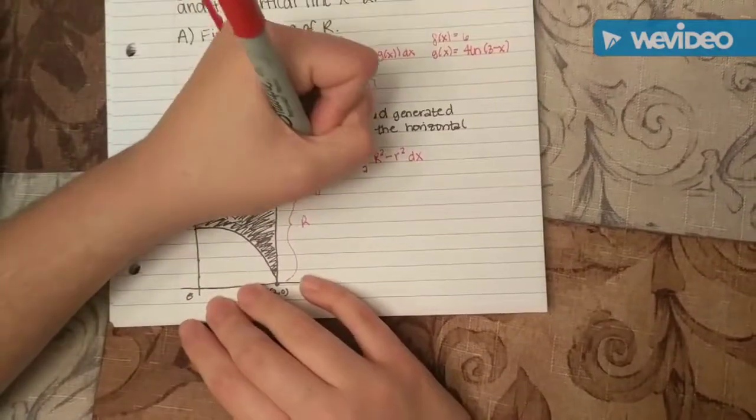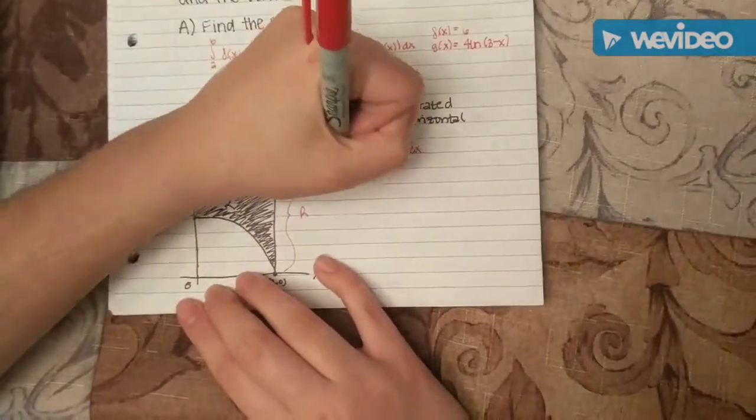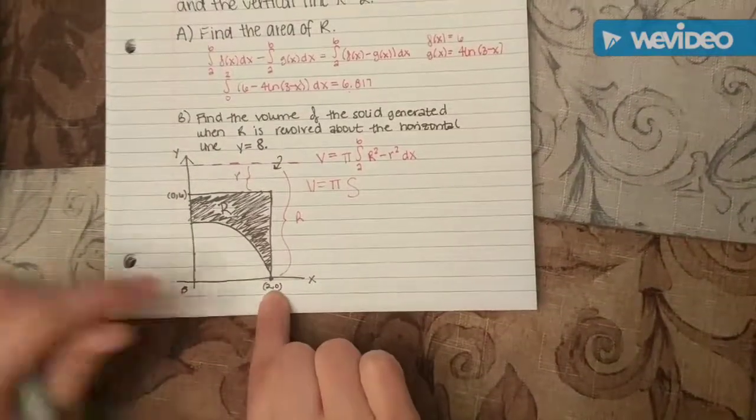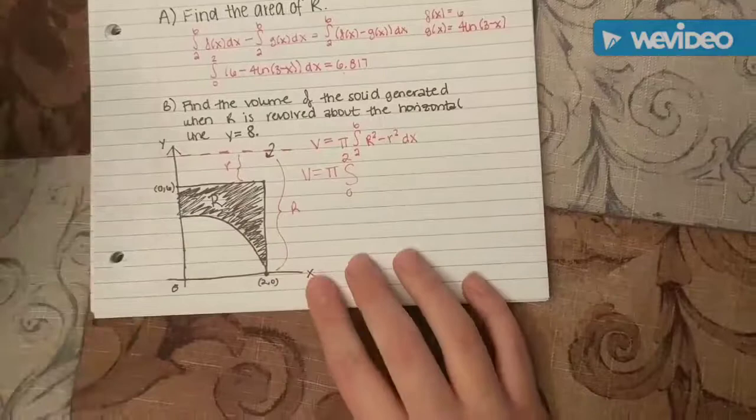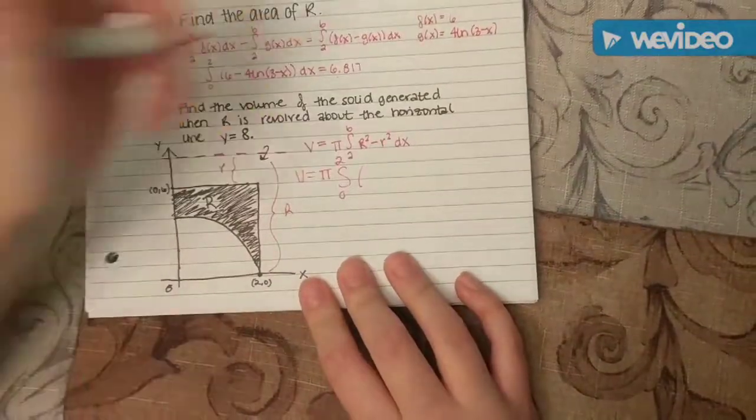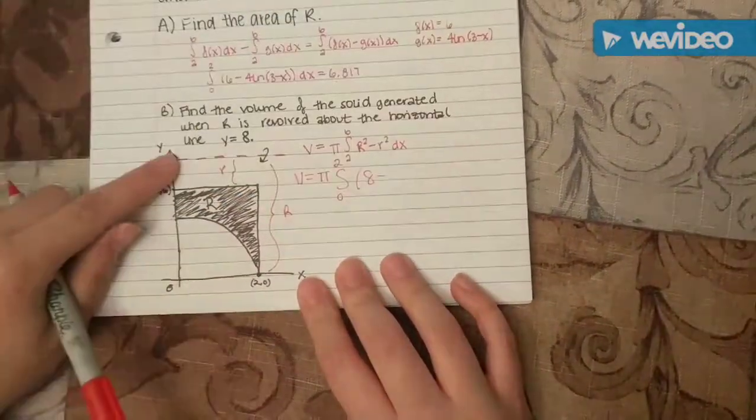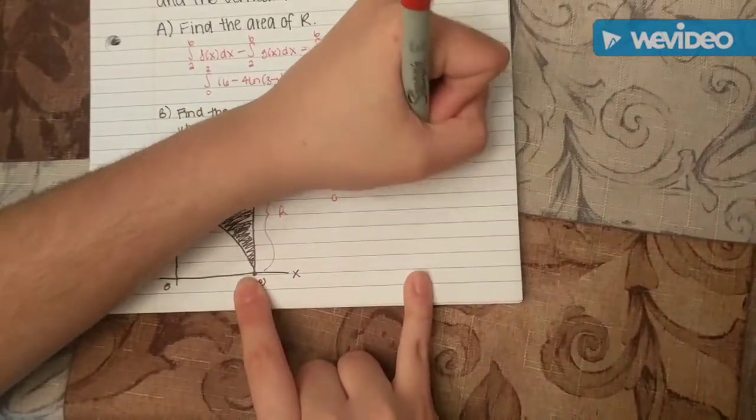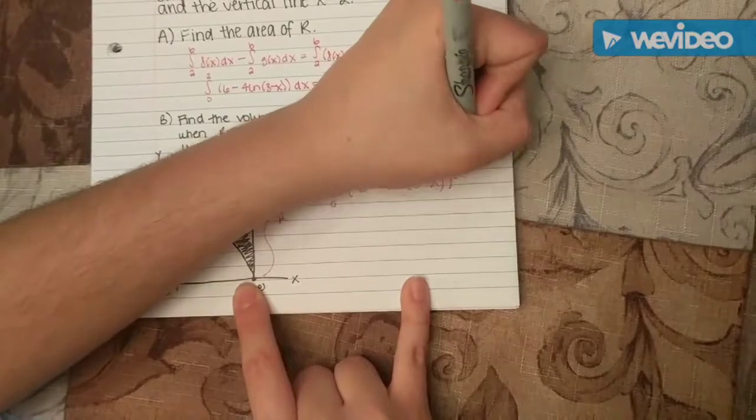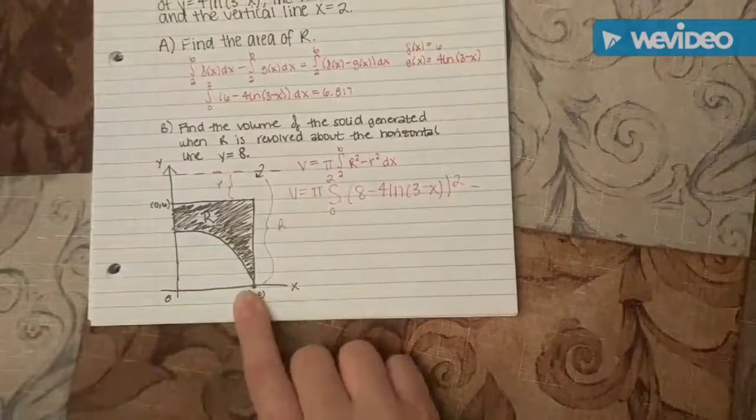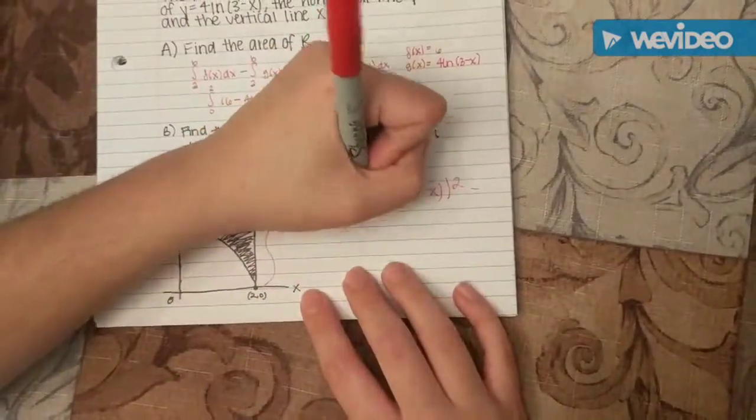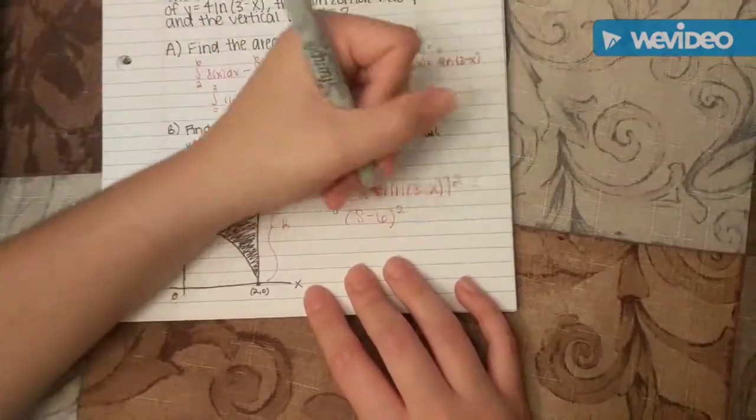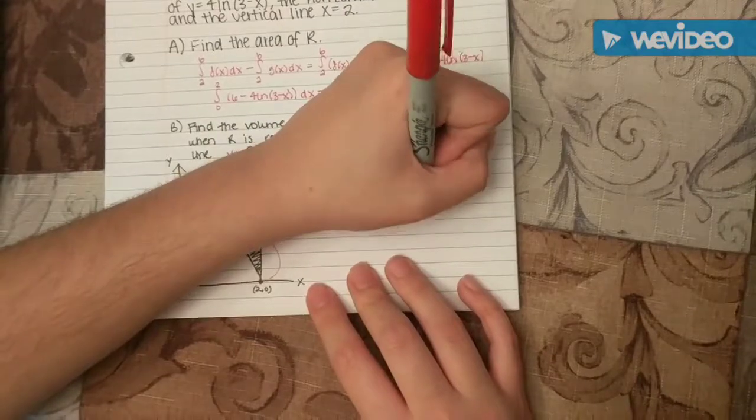Now we're just going to go ahead and plug all the values in. The pi would stay the same, and your bounds would be from 0 to 2 because those are the x coordinates. Your big R would be 8, which is the axis of rotation, minus 4ln of 3 minus x squared, minus, so now we're going to do little r, so we're going to have 8 again minus 6 because it's the closest, squared, and then dx.